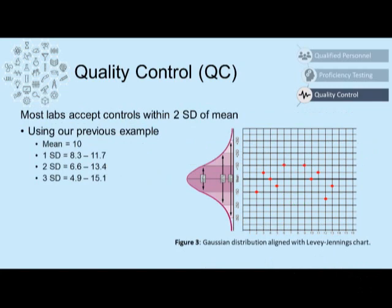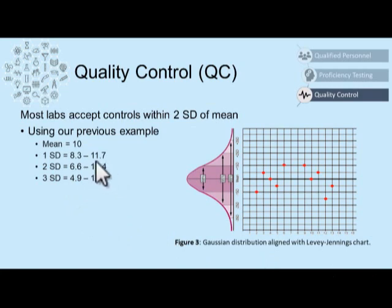Most labs accept control values that fall within two standard deviations of the mean. So in our example, our mean was 10. Plus or minus two standard deviations would give us a range of 6.6 to 13.4. One standard deviation would be acceptable, and that would be between 8.3 and 11.7.